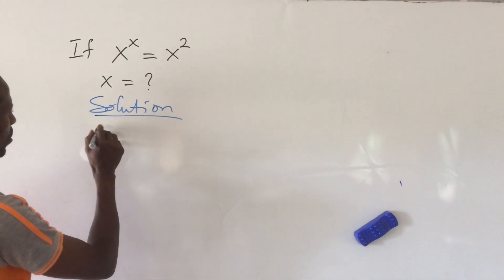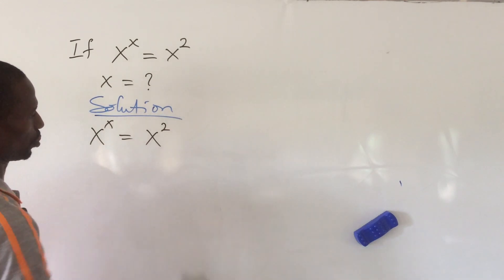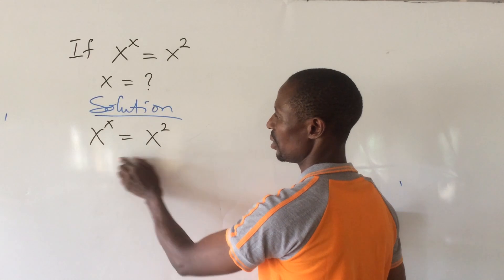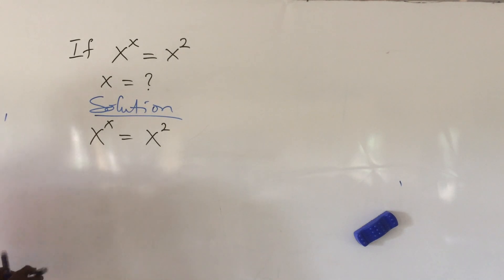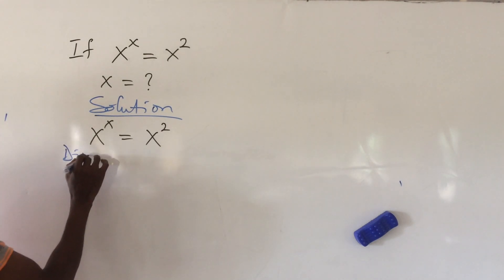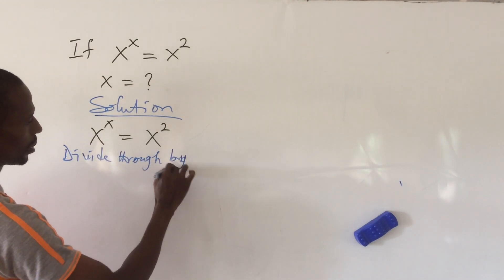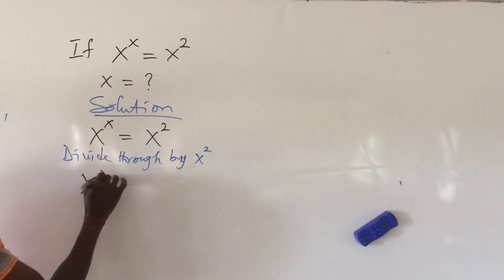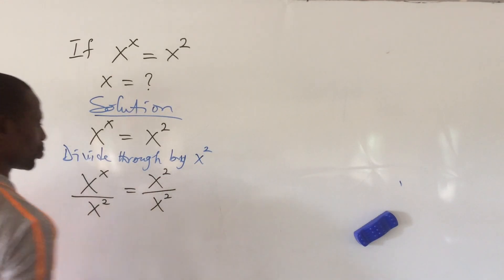Solution. So let's write our equation then. We have x to the power of x equal to x to the power of 2. All right. Now the first thing you do is to divide through by x raised to power 2. So from here we can now say divide through by x to the power of 2. So if we do that, this will give us x to the power of x all over x to the power of 2 equal to x to the power of 2 all over x to the power of 2.